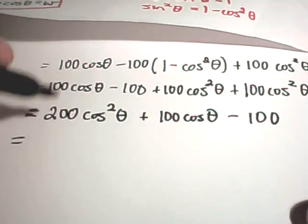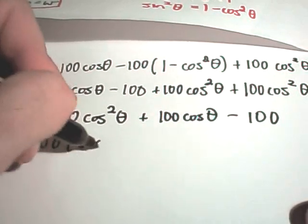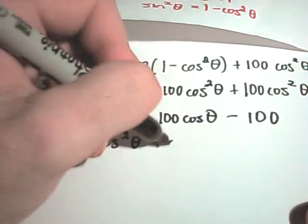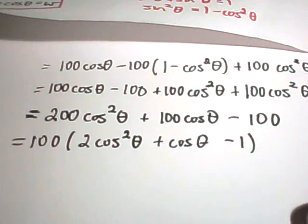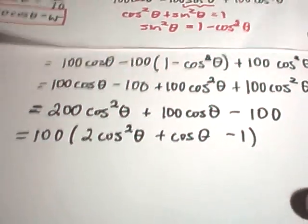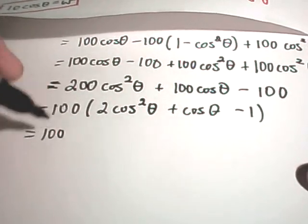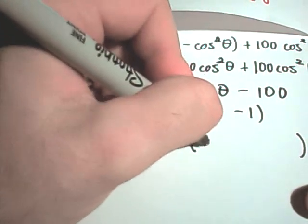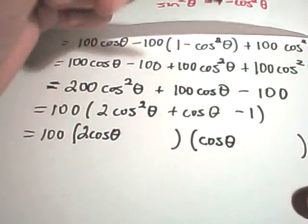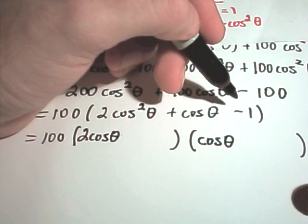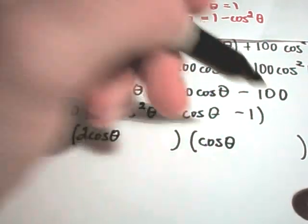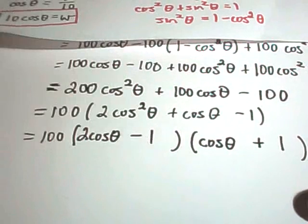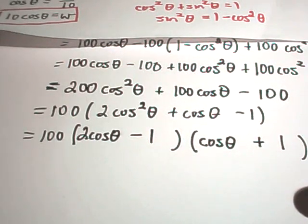Now I can factor out 100, and then I'm left with 2 cosine squared of theta, plus cosine of theta, minus 1. And now we simply need to factor out the original part. So I'm just going to do it just like it was a quadratic in x. So I have a cosine theta, a 2 cosine theta, and a cosine theta. I need to get negative 1, so I know I need a plus 1 and a minus 1, but I want a plus cosine theta. So I think those values should work. 2 cosine theta minus 1, cosine theta plus 1.